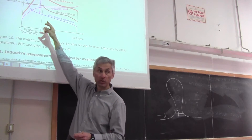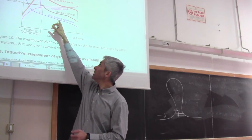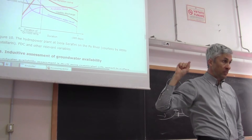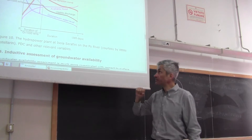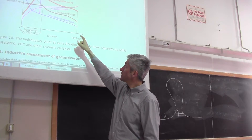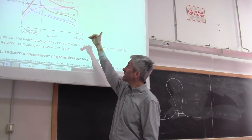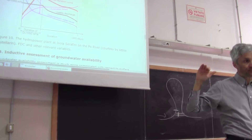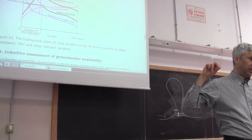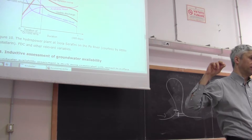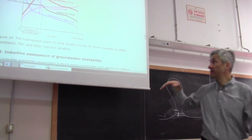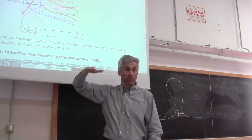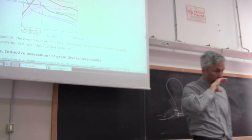A constant discharge equal to the design flow is turbined up to the duration where the river flow duration curve reaches 1000 cubic meters per second. After the river flow duration curve is crossed, we can turbine only the discharge given by the flow duration curve. The blue lines show the downstream and upstream water levels. The upstream water level is kept constant under regulation; the downstream water level is related to the original flow duration curve, so it decreases for decreasing river flow.